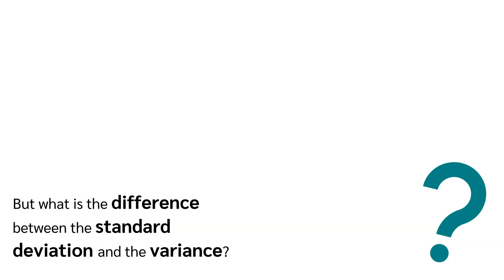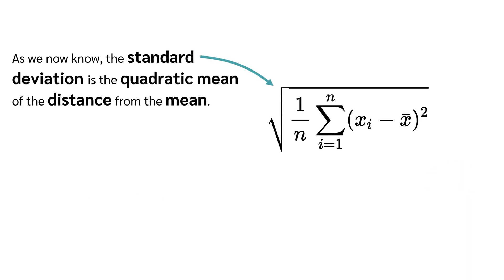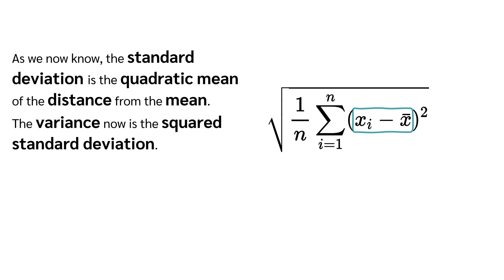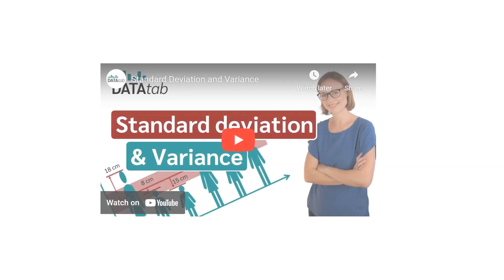But what is the difference between the standard deviation and the variance? As we now know, the standard deviation is the quadratic mean of the distance from the mean. The variance now is the squared standard deviation. If you want to know more details about the standard deviation and the variance, please watch our video.